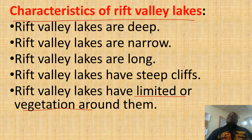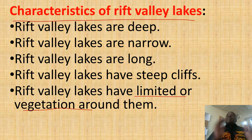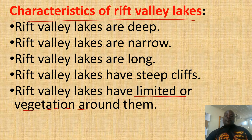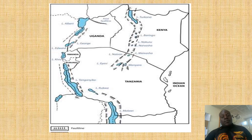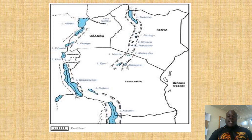Compared to downwarped lakes, rift valley lakes are located within a rift valley — this is obvious. If you check on this map, it tries to give us the location of different lakes found within the western and eastern areas of the Great East African Rift Valley.